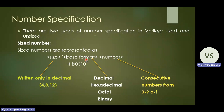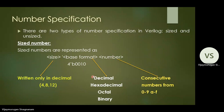The base format specifies which number system is used. There are four types: decimal, hexadecimal, octal, and binary. Use 'd' for decimal, 'h' for hexadecimal, 'o' for octal, and 'b' for binary number systems. After the base format, you write the actual numerical value.